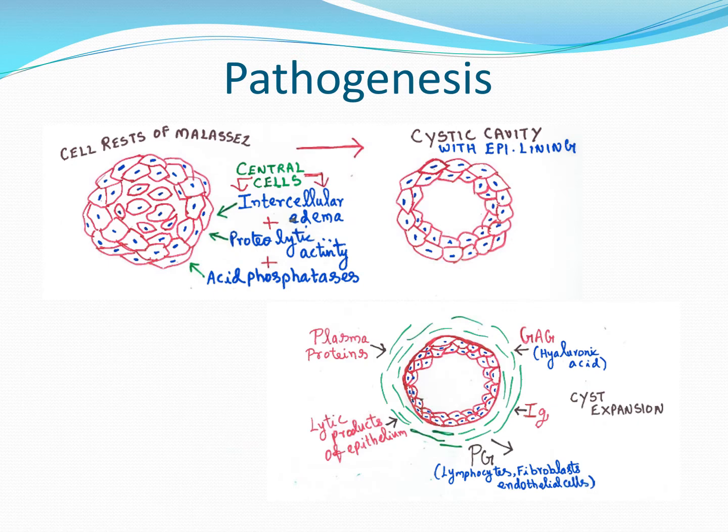Pathogenesis means how a lesion occurs and from which tissue it arises. Etiology means causative factor — here the etiology is inflammation due to bacterial products or necrotic pulp tissue reaching the periapical region. The etiological factor is dental caries or trauma causing pulp death. The pathogenesis describes how this etiological agent causes the cyst — the inflammation in the periapical region makes the cell rests of Malassez proliferate.